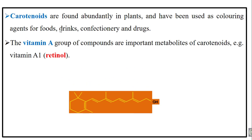Carotenoids are found abundantly in plants and have been used as coloring agents for food. Vitamin A is a group of compounds that are important metabolites derived from carotenoids, specifically from beta-carotene.